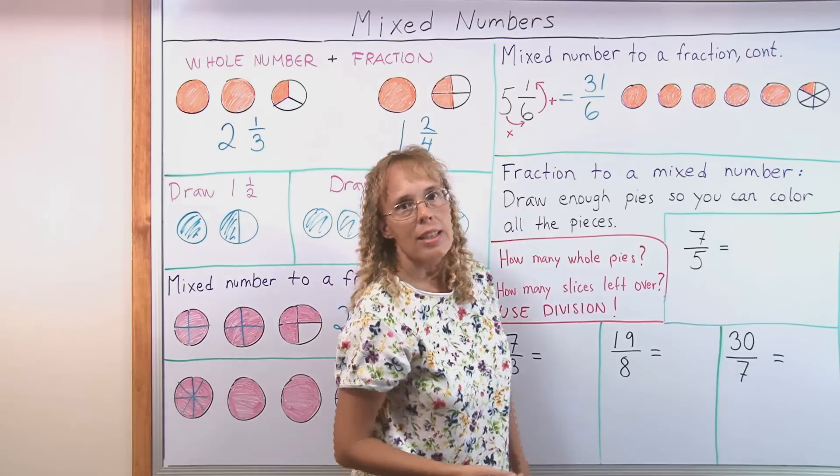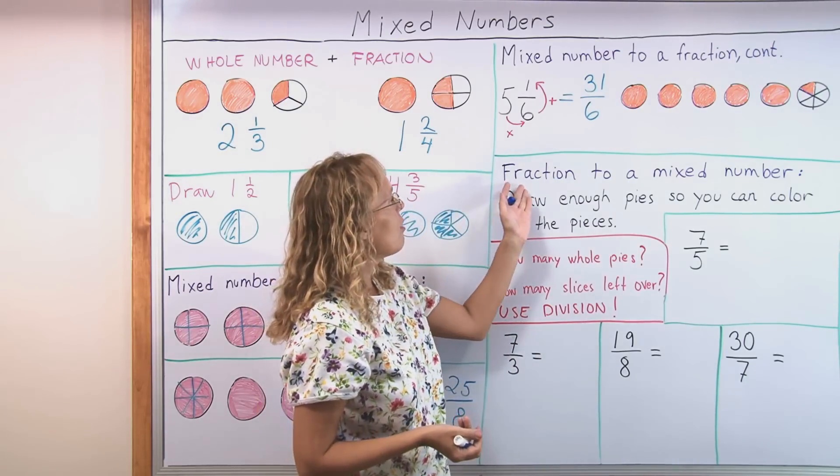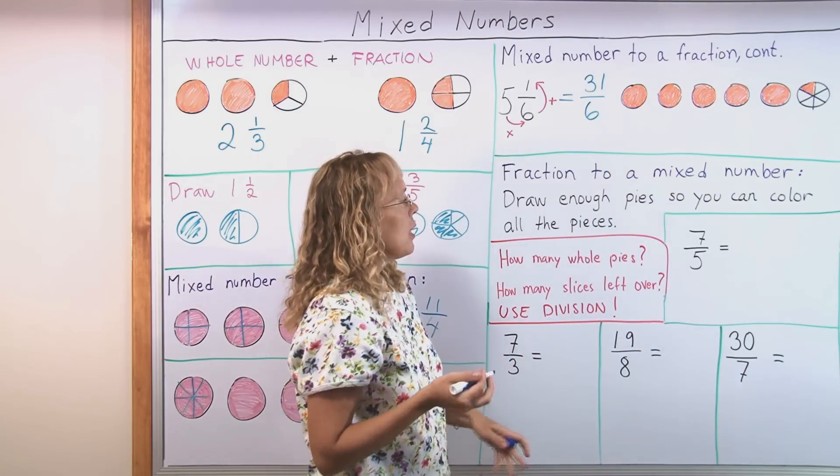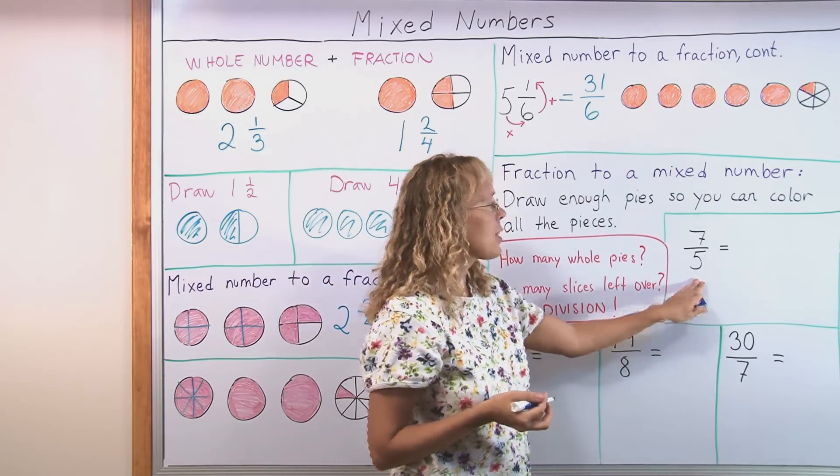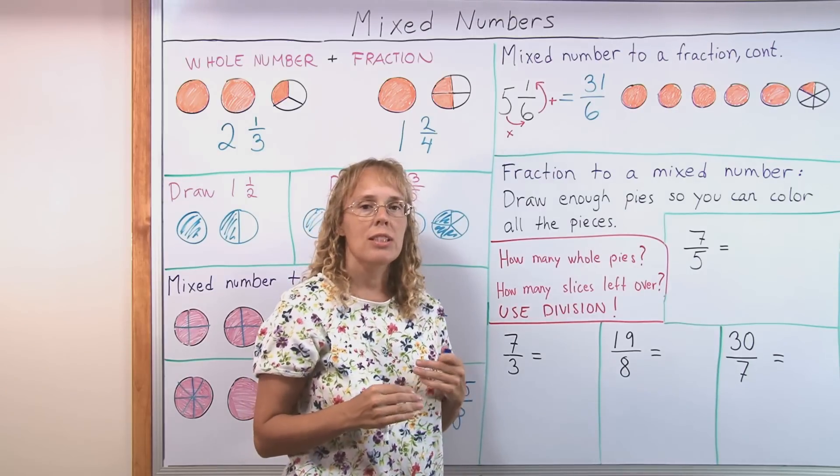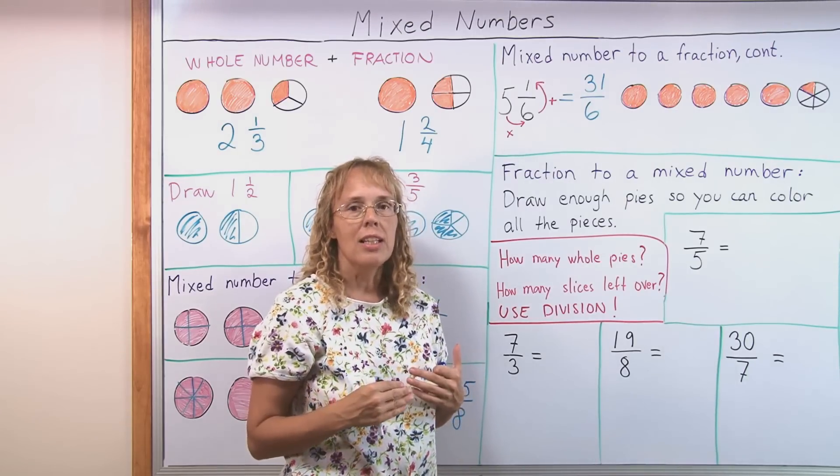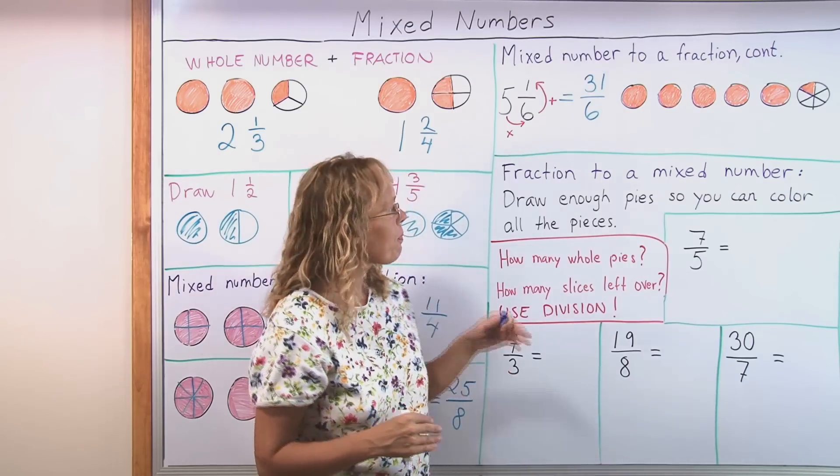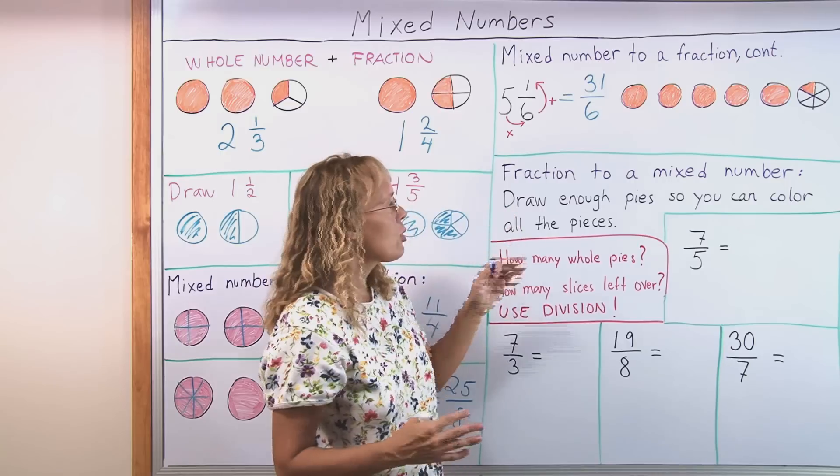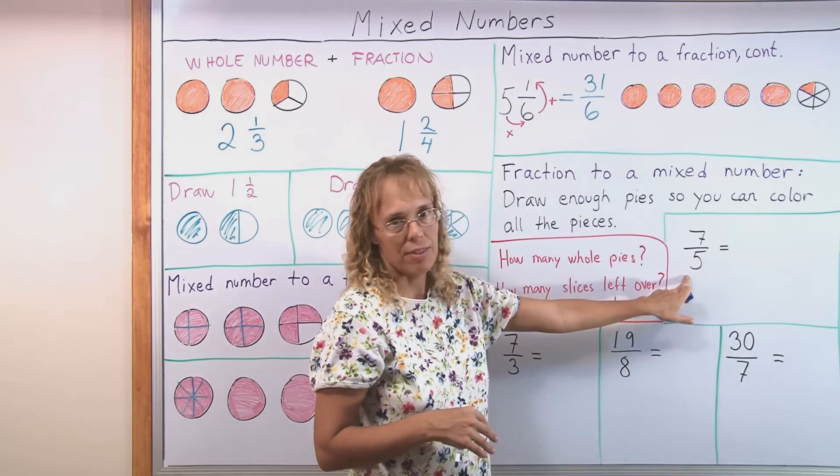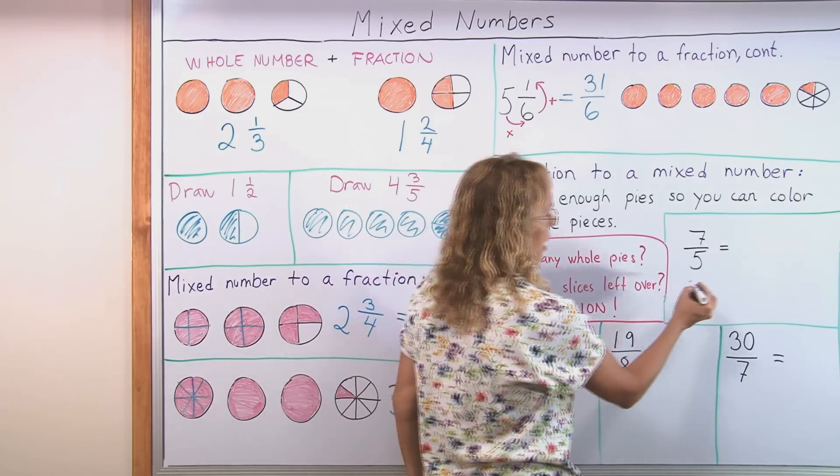Now let's look at the opposite problem where we are changing a fraction into a mixed number. Here's an example. Seven fifths. And we need to write it as a mixed number. First, students can again use visual models. I like to use visual models with all fraction operations at first. The idea is to draw enough pies so you can color seven fifths. So let's draw some pies.